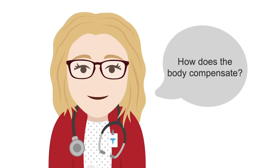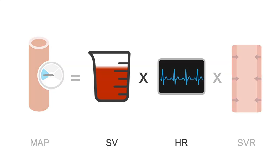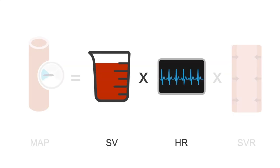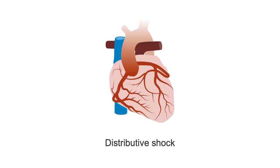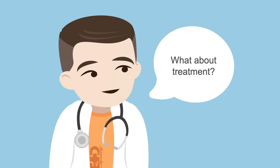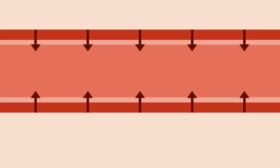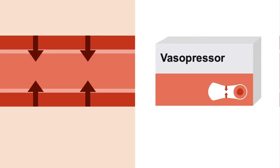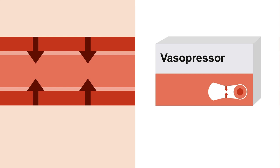Let's predict the body's compensatory changes. Stroke volume and heart rate will both increase in order to try and maintain MAP. So we expect a person in distributive shock to have a heart pumping hard and fast to try and maintain perfusion to the organs. The primary insult is reduced SVR caused by the blood vessels becoming dilated and loose, so vasopressors, which constrict the vessels and therefore increase SVR, are a great treatment for septic or distributive shock.